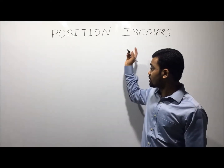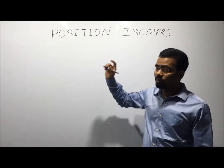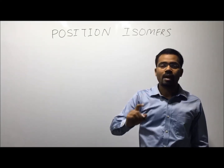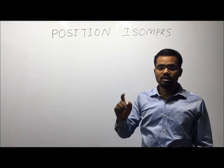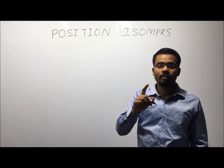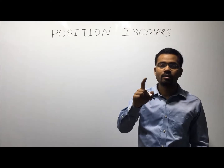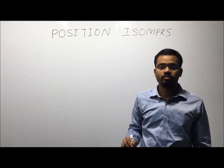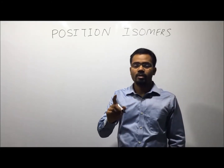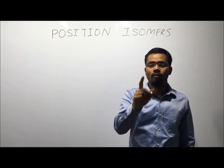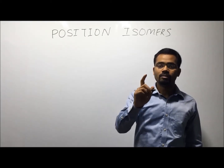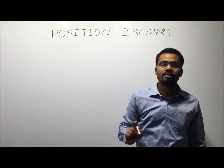The most important conditions for Position Isomers are: first, compounds must have the same number of carbon atoms in the parent chain or inside chain. Second, they must have the same nature of functional group and the same nature of parent chain.